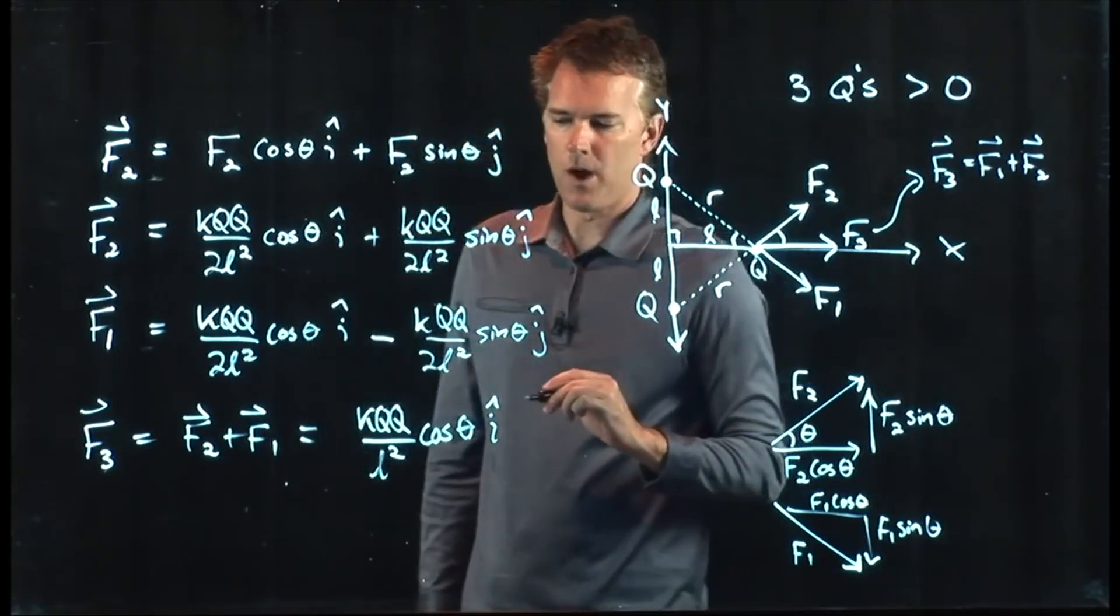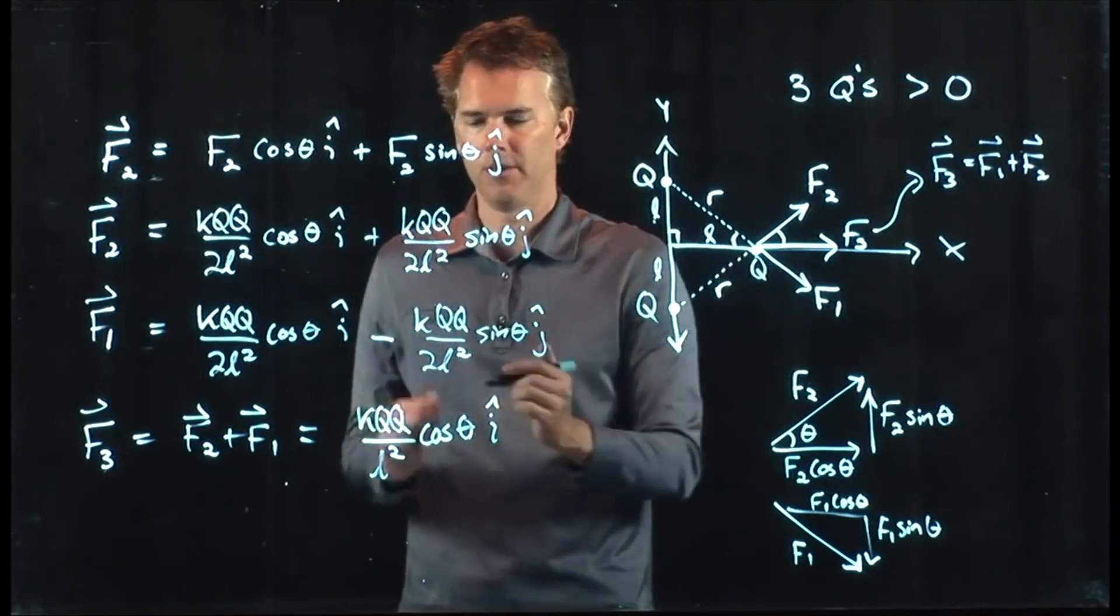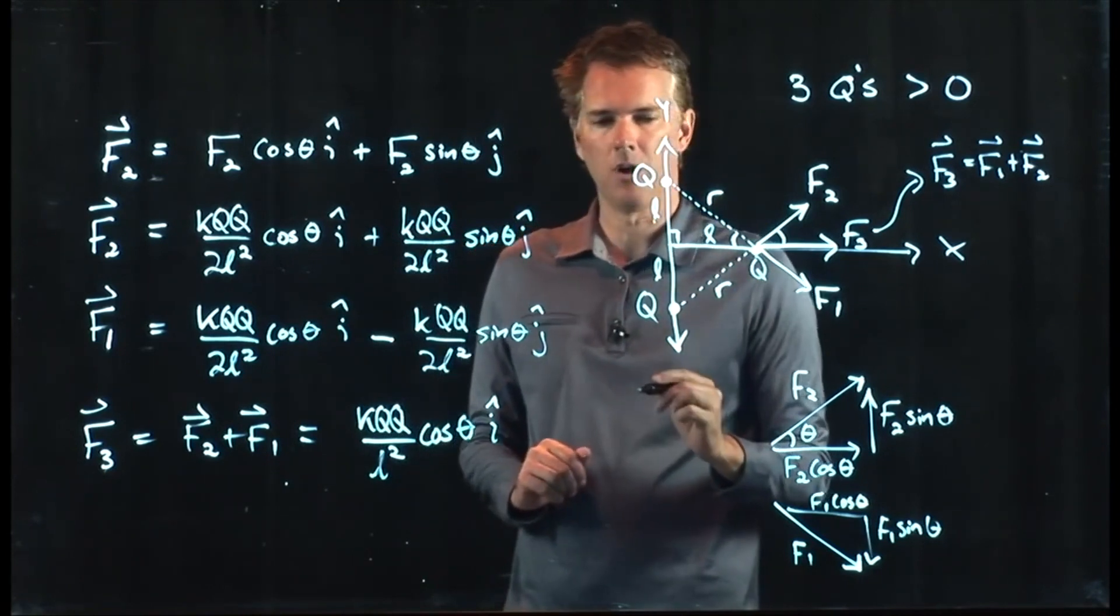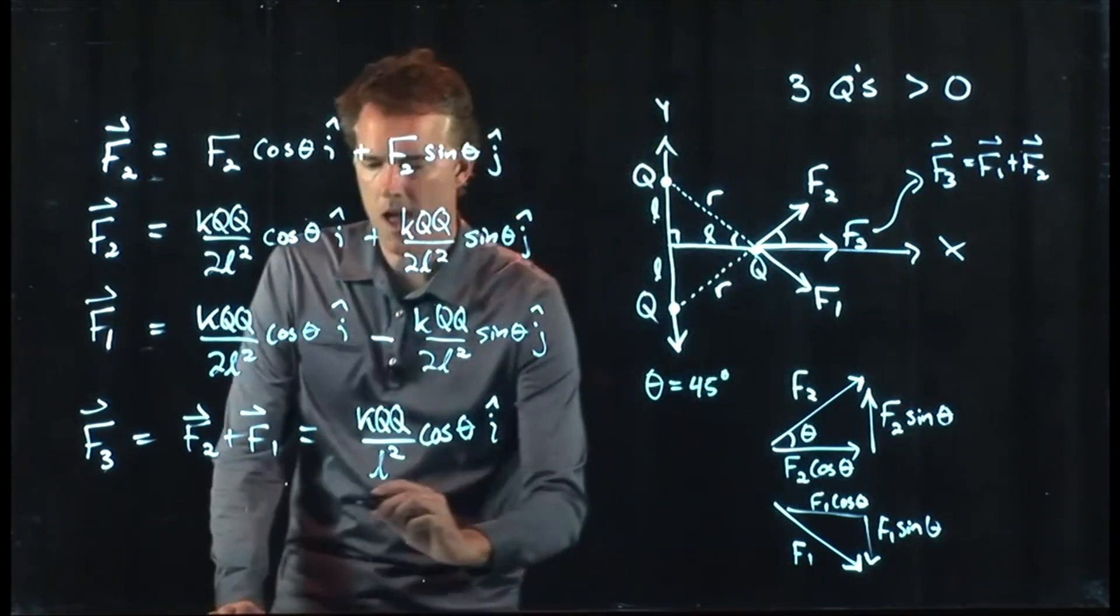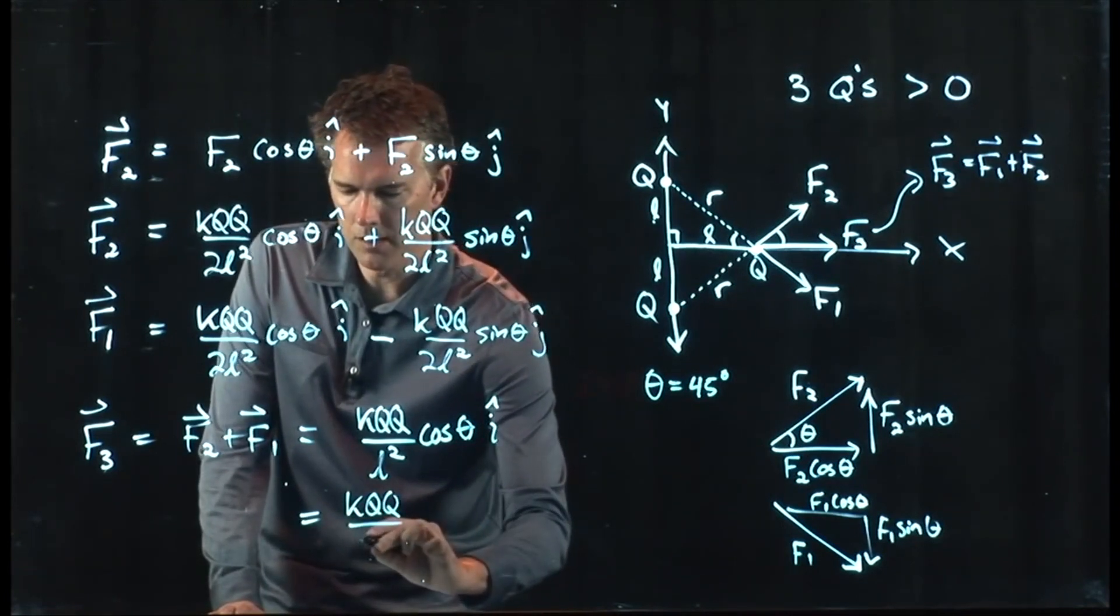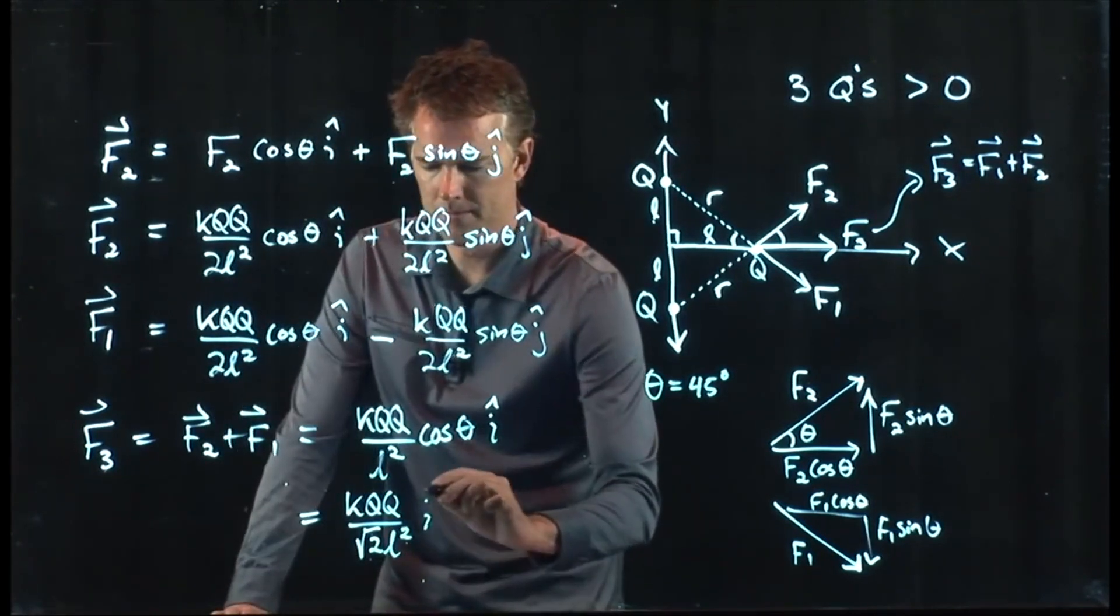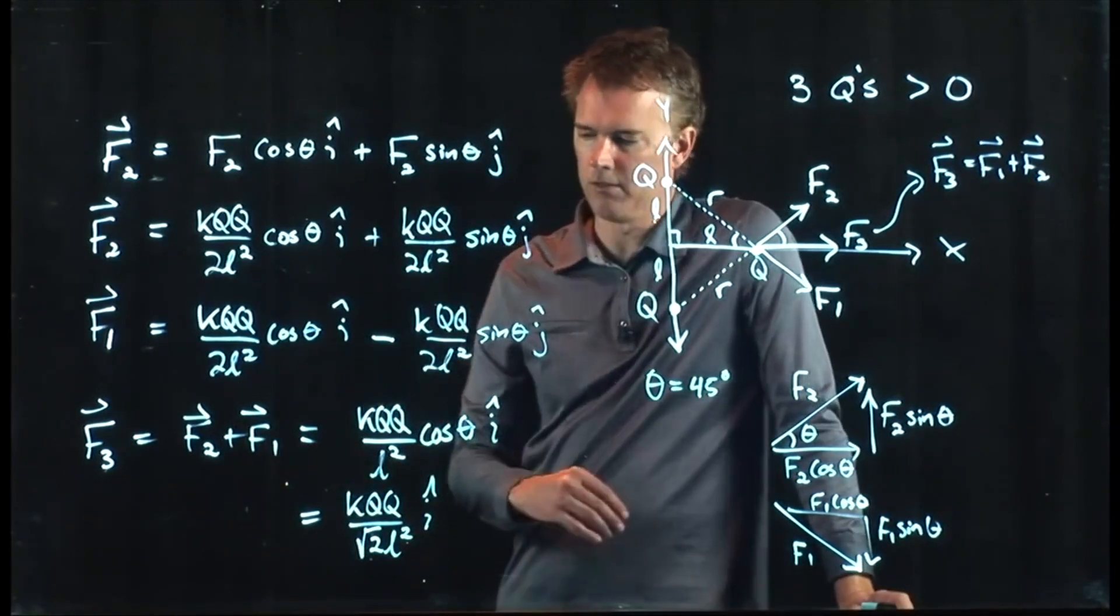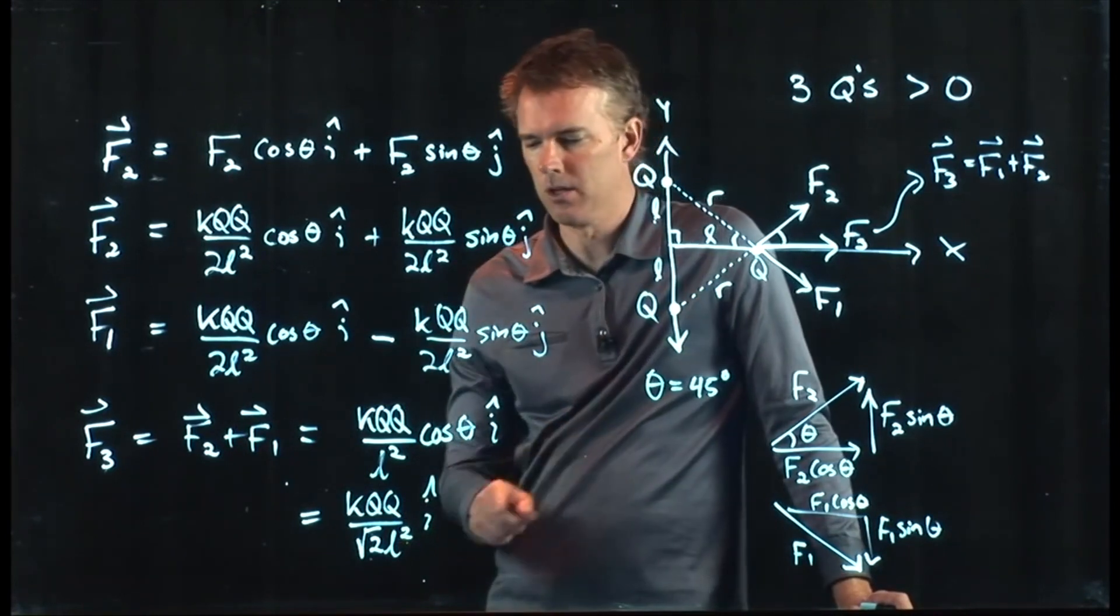And if you want the magnitude of F3, then it's just the stuff that's out in front. Now, in our example, we picked L and L. And so we also know that theta is going to be 45 degrees here. And 45 degrees. Cosine of 45 degrees gets us a root 2 in the denominator. F3, that's your remaining force. It's KQQ over root 2L squared. And it's in the X direction, I hat.